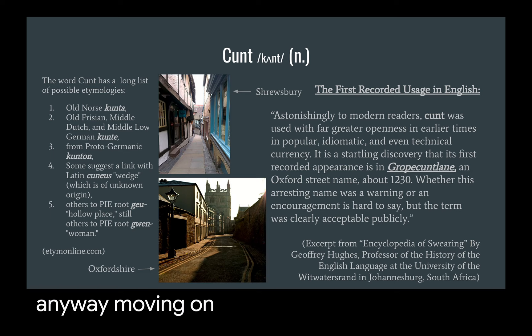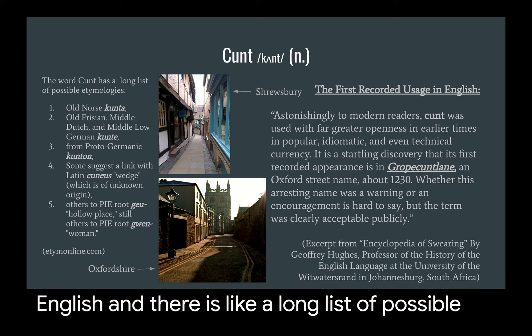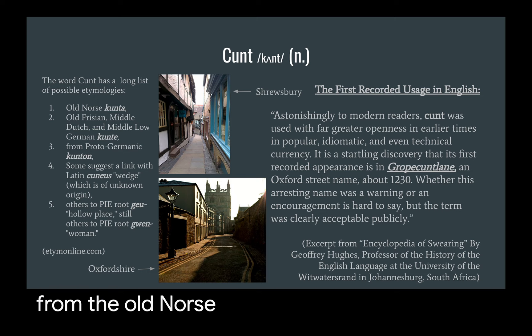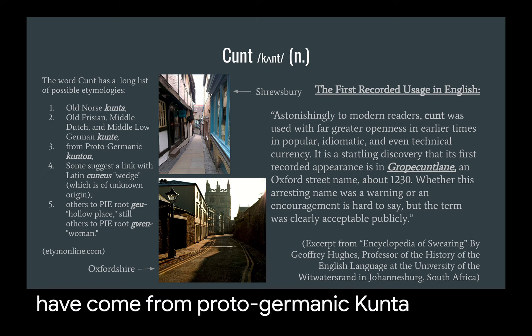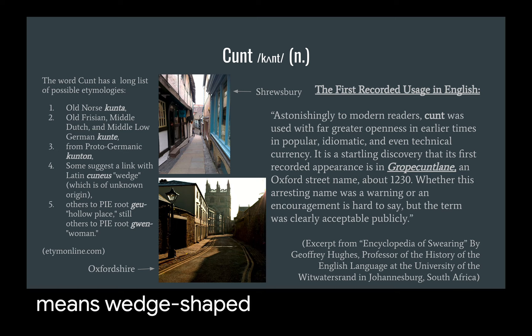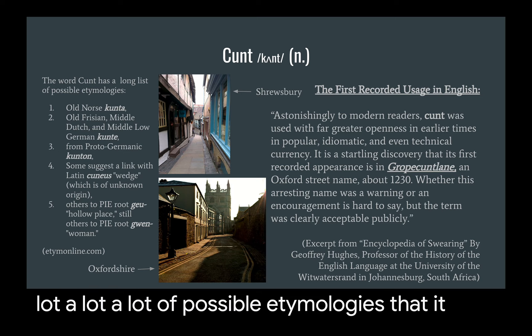Lastly, let's talk about 'cunt.' Now, this is an extremely, extremely taboo word. Next to the n-word, it is the most taboo word that we have in English. And there's a long list of possible etymologies that it has. So it could either have come from the Old Norse word 'cunta,' or the Old Frisian, Middle Dutch, Middle Low Germanic 'cunt.' It could have come from Proto-Germanic 'cunton.' Some suggest a link with the Latin 'cunius,' which means 'wedge.' Even others suggest it comes from Proto-Indo-European 'geu' for 'hollow place,' and still others also the root 'gwen' for 'women' from Proto-Indo-European. So as we can see, there's a lot, a lot, a lot of possible etymologies that it could have had.